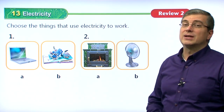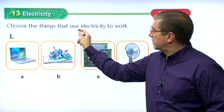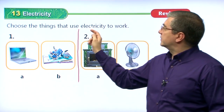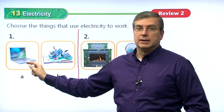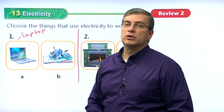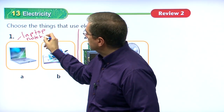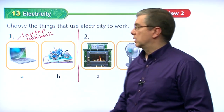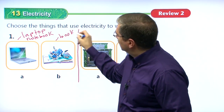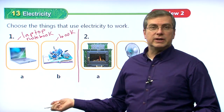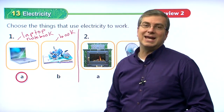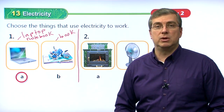We've just looked at the chart of different things that use electricity. Now here we have two questions. Number one: choose the things that use electricity to work. What is this? This is a laptop computer — people also call it a notebook. This other one is just a book that you read. Which one uses electricity? Of course, it's A — your laptop or notebook computer uses electricity.